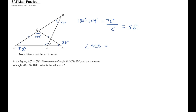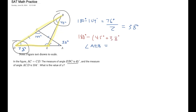Is there a way to find angle DEB? It's actually pretty interesting because they gave us the measure of angle EBC, which is 45 degrees, and we just figured out angle BDE is 38 degrees. These two angles make up a portion of this triangle, so since there are 180 degrees in a triangle and we know two of the angles — 45 degrees and 38 degrees — we can find the last value, which is 97 degrees.